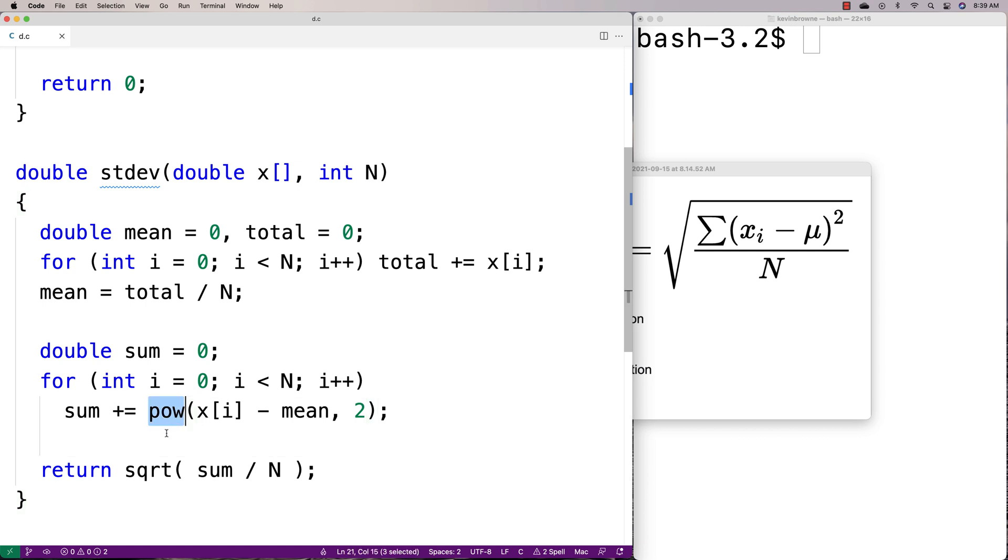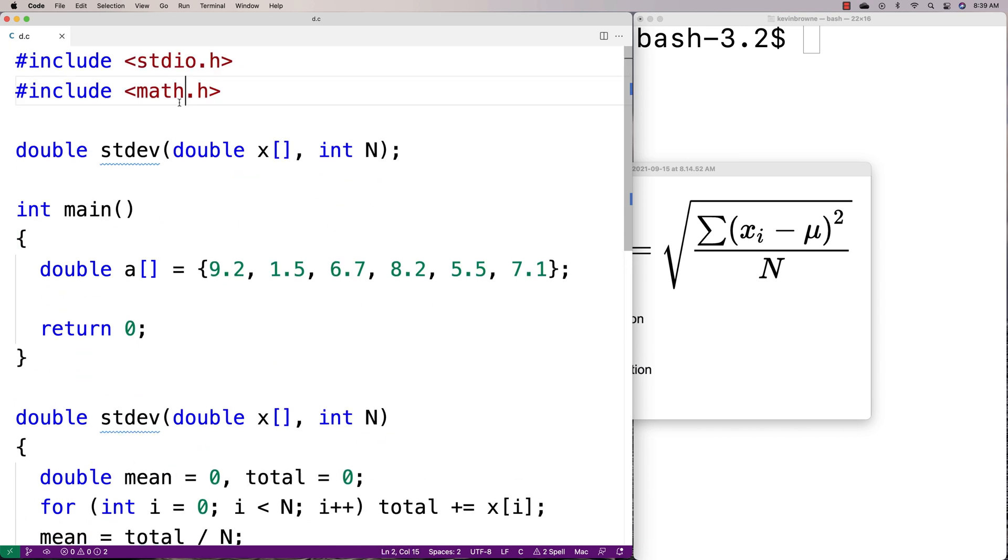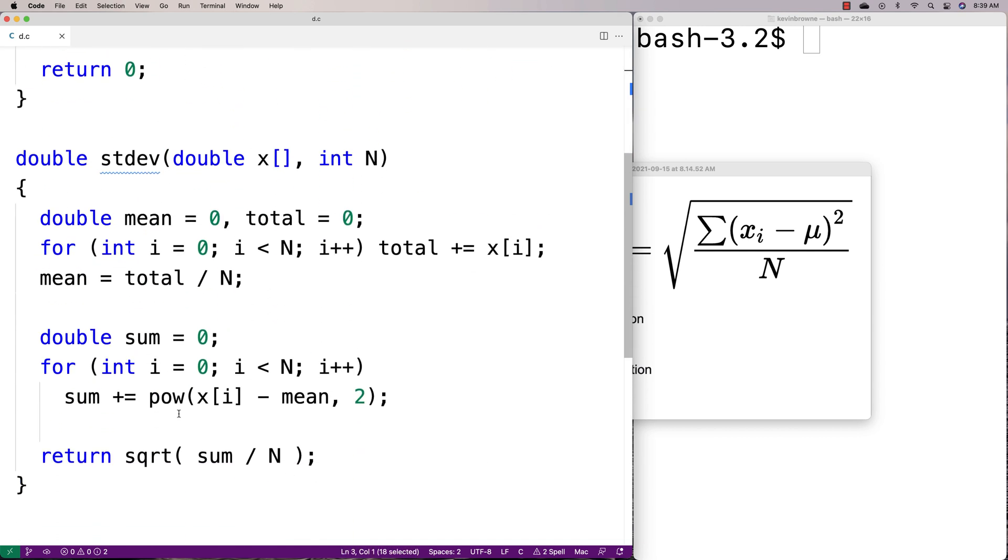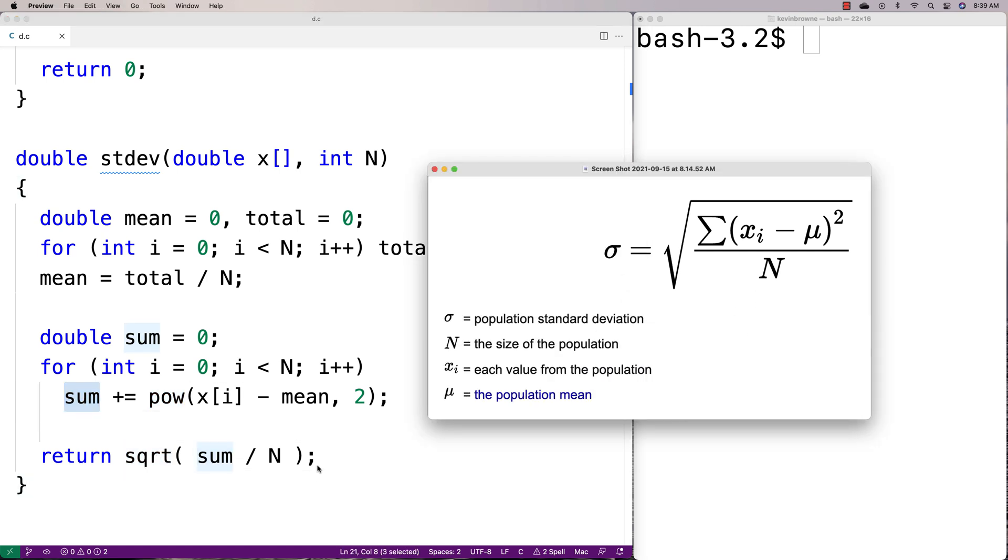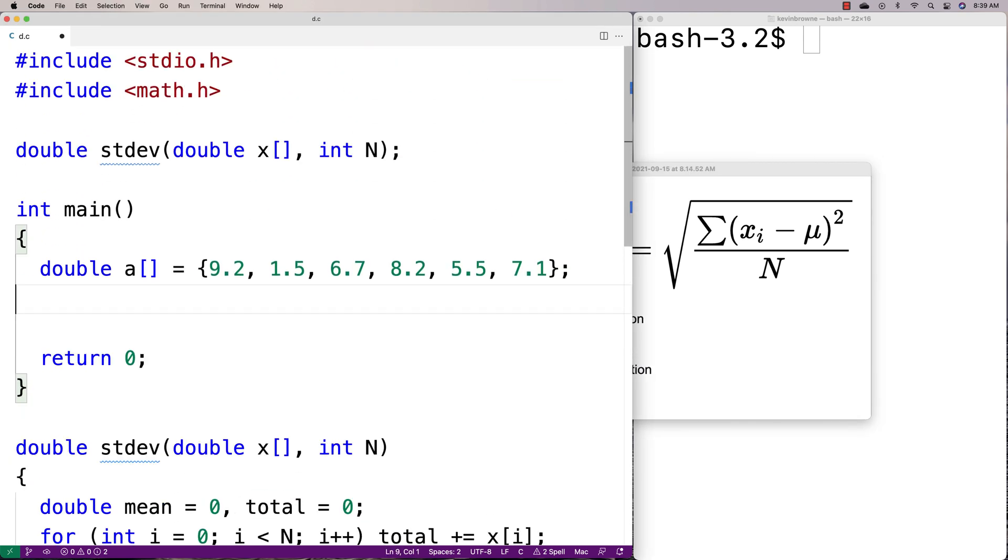The pow and sqrt functions come from the math library. They do power and square root for us. We're taking the square root of sum divided by n, just like in the formula. That should be it.